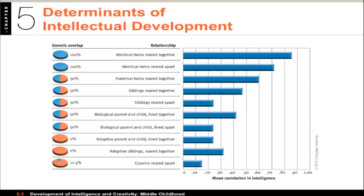Research also shows the positive effects of enriched early environments created by having responsive parents who provide appropriate play materials and varied experiences. There are a lot of things in terms of intelligence and creativity that have to do with social factors, environmental affordances, and the things made available to people. And that's where we're going to end this particular section.